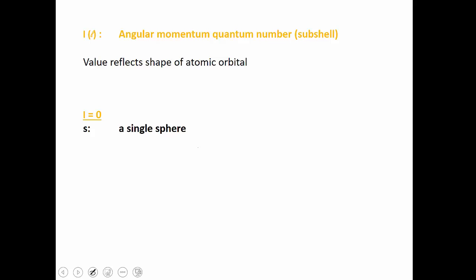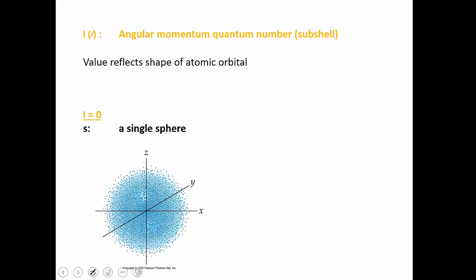Our first subshell has the lowest energy, and that is the S subshell. S subshells have an L value of zero, and they are composed of one single atomic orbital that has a sphere shape. This orbital was defined because we looked at a plot of all the different locations of an electron with this specific energy, and it turned into a sphere shape when we looked at 90% of those electron locations. The shape of an orbital is defined as the location where we have about a 90% probability of finding an electron with that energy.